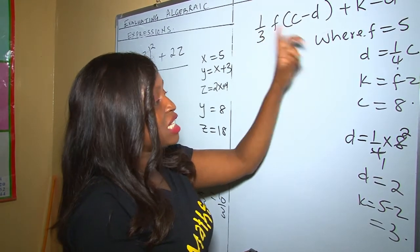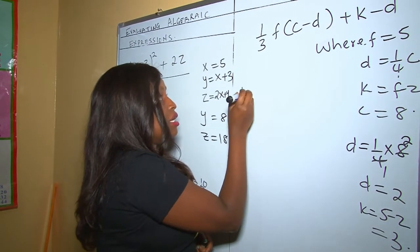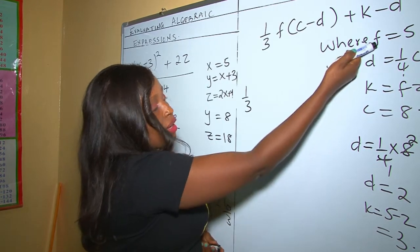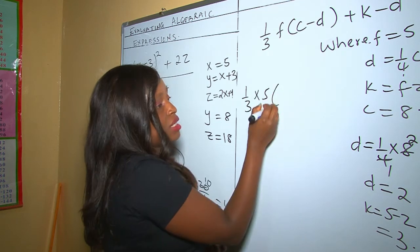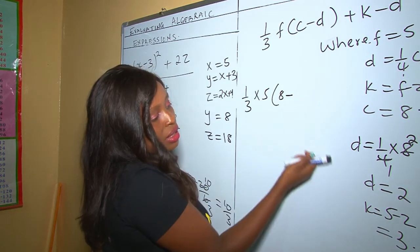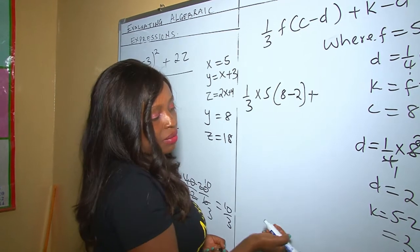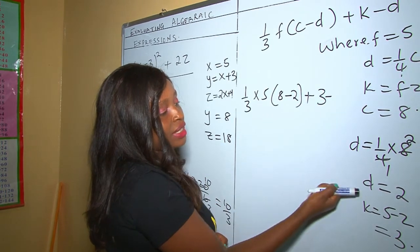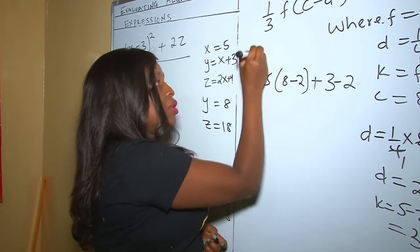Replacing the letters with their values: we have one-third times F, and our F is 5, so multiplied by 5; bracket C (which is 8) take away D (which is 2), close the bracket; plus K (which is 3); take away D (which is 2).